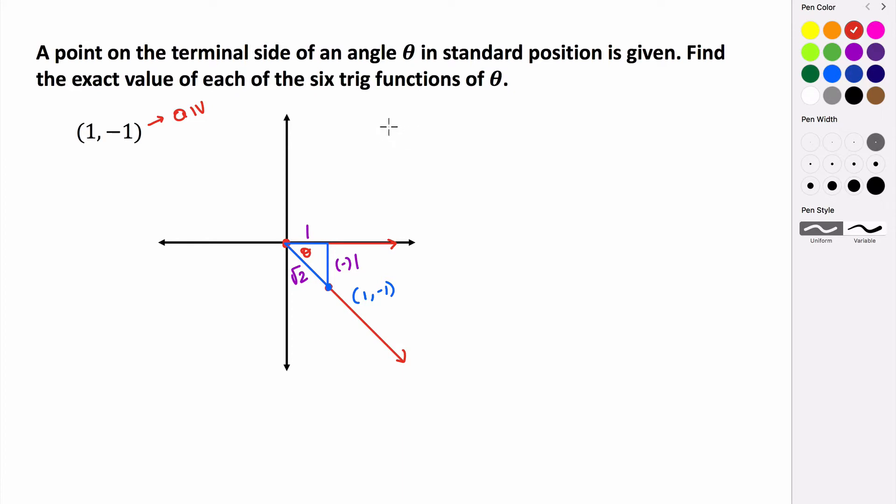So the sine of θ. The sine of θ is equal to the opposite side, which is -1, divided by the hypotenuse, which is √2. Now we have to rationalize this. So multiply numerator and denominator by √2. And we end up with -√2 over 2.